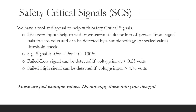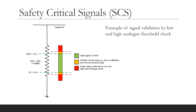We now have a simple tool at our disposal. Live zero inputs help us with open circuit faults or loss of power — the input signal will fail low and can be detected by a simple voltage threshold check. For example, if our signal is 0.5V to 4.5V for 0 to 100 percent scaled value, we can check for a low signal less than 0.25V and a high signal greater than 4.75V — anything outside that range is a bad signal. These are just example values for illustration. This shows for a single channel the signal validation with low and high analog threshold checks. The orange region is slightly out of range but not so much that we would consider it a fault, allowing for minor calibration errors.